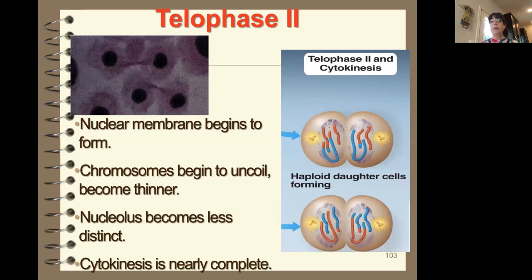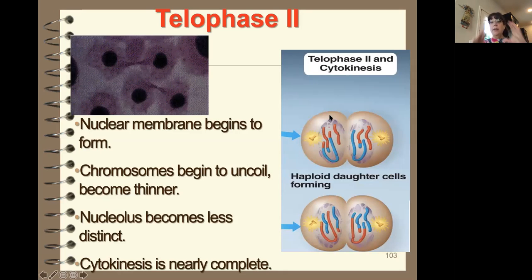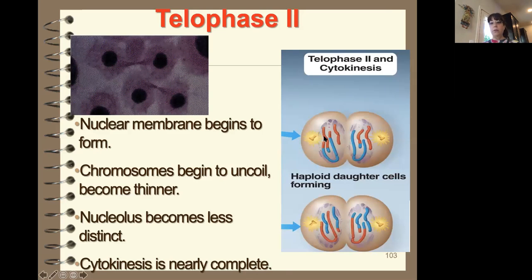That leads us to telophase two, where everything begins to relax. Chromosomes unwind into chromatin, the nucleus begins to reform, and cytokinesis splits the cells in half. I am now truly haploid — I've got four haploid daughter cells: two from one cell, two from the other.